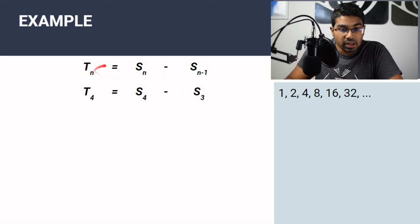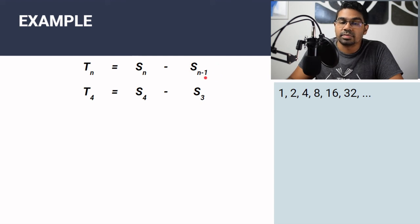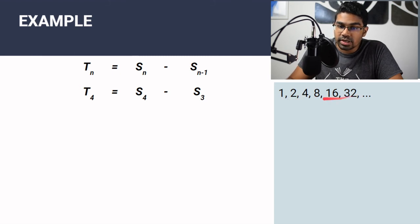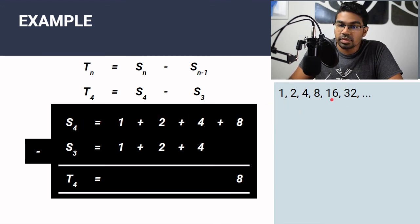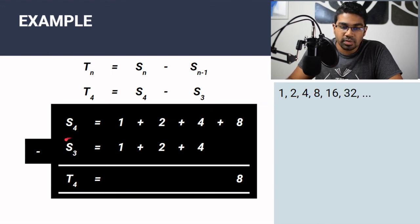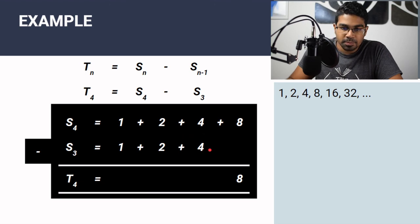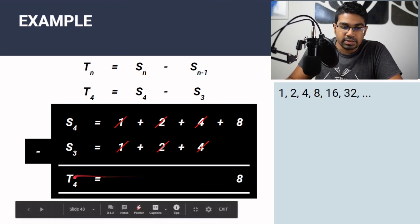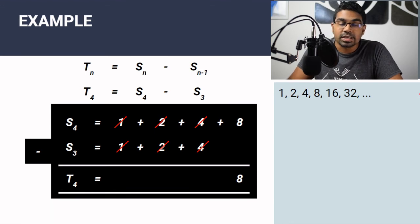Just like in arithmetic progression, Tn can also be found using: Tn = Sn − S(n−1). For example, to find T4, we take the sum of the first 4 terms (1+2+4+8) minus the sum of the first 3 terms (1+2+4). When we subtract S3 from S4, what remains is the fourth term: T4 = 8. This method is applicable to both geometric and arithmetic progressions.